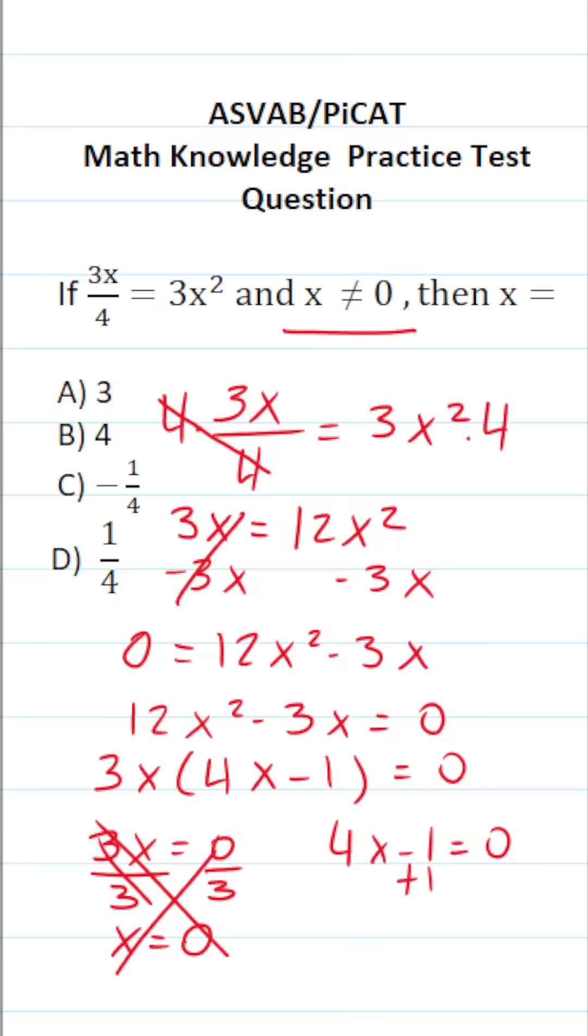Let's go ahead and add 1 to both sides over here to get 4x by itself. It says 4x equals 1. To get x by itself, we're going to divide both sides of the equation by 4. This says x equals 1 fourth. So the answer to this one is D, x equals 1 fourth.